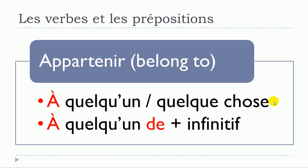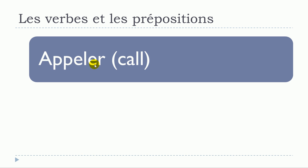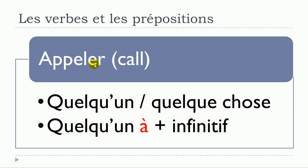So to summarize: appartenir à quelqu'un, appartenir à quelque chose, and appartenir à quelqu'un de + infinitif. Next verb: appeler. First structure — no preposition — appeler quelqu'un or appeler quelque chose. Second structure: appeler quelqu'un à + infinitif.